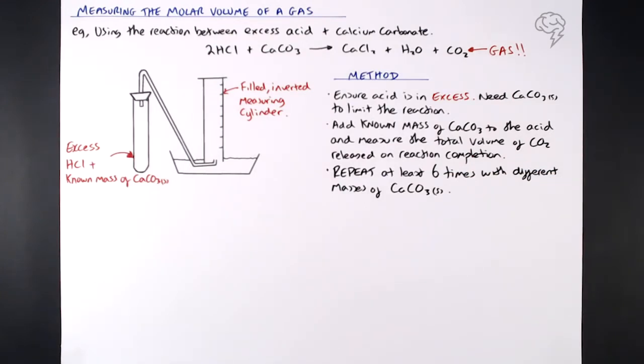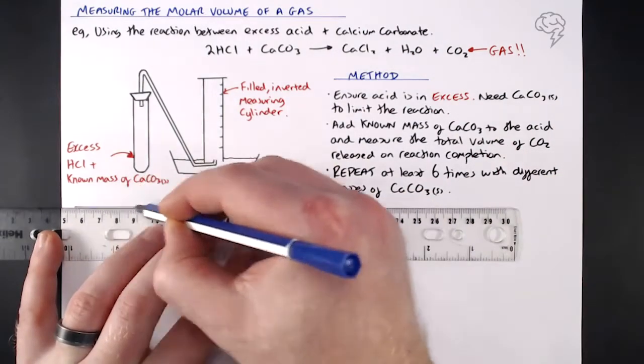We're not measuring how much is released over time or anything like that, we're just waiting for the reaction to go to completion, and then checking out our measuring cylinder and finding out how much CO2, in terms of volume, is actually produced. Once we've done our first one, all we need to do is set it up again and repeat. We repeat this at least six times with different masses of calcium carbonate.